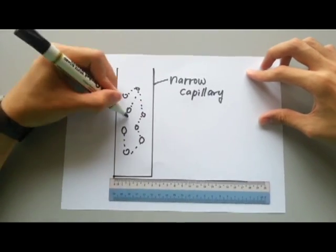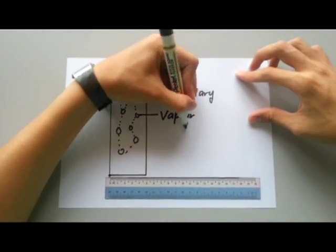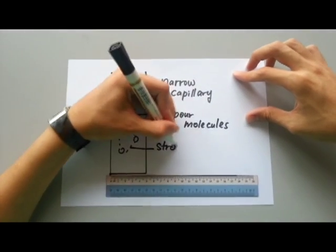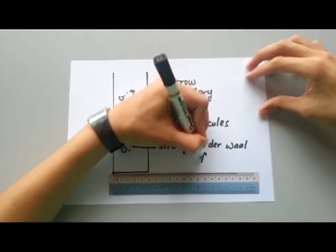Because these vapor phase molecules are in a narrow capillary, there are more van der Waals interactions amongst each other, hence causing them to condense below saturation vapor pressure.